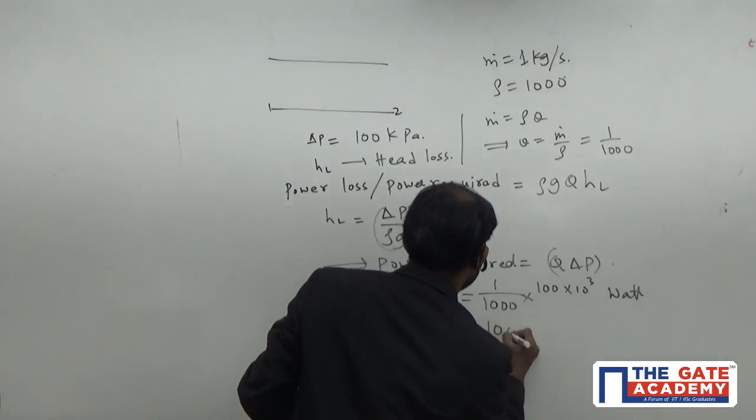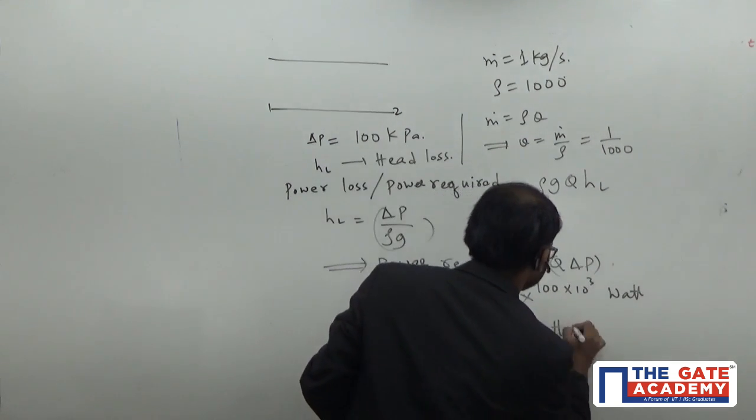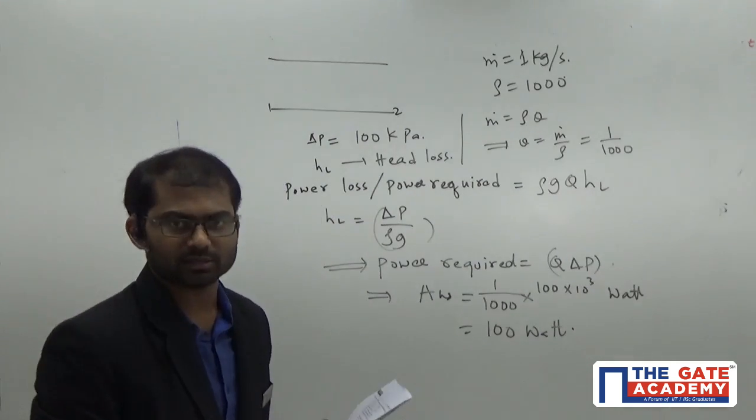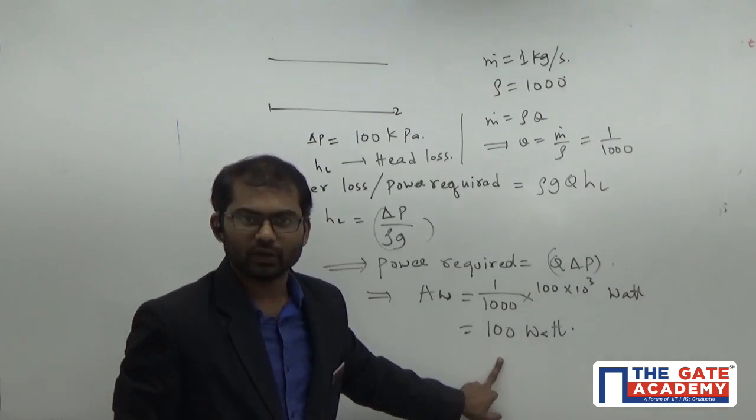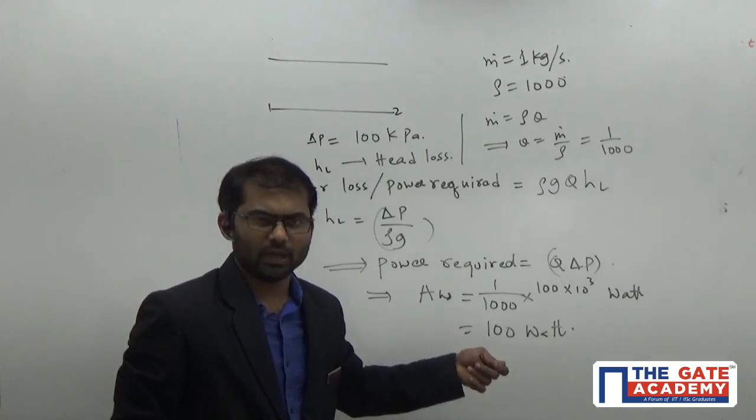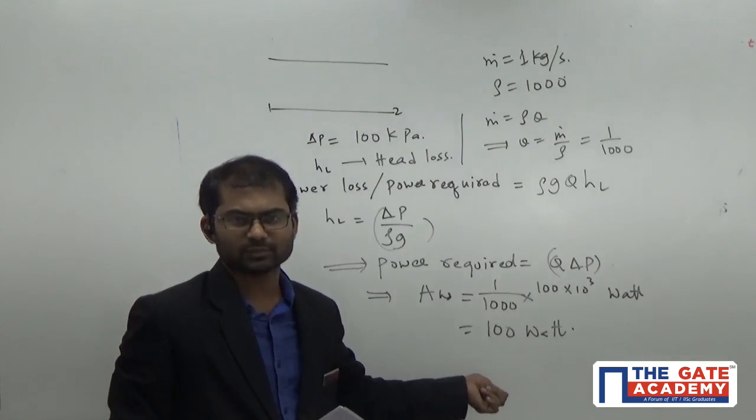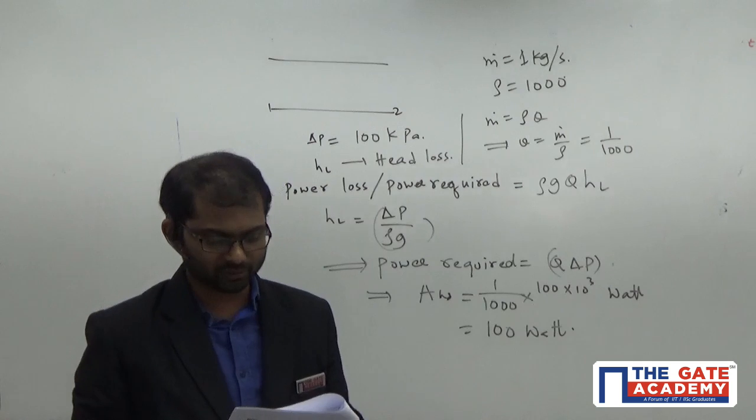So this will become watt here. So thousand, thousand, and the answer will become thousand watts. They are asking in terms of watts, so you have to enter in terms of watts itself. If they have asked in terms of kilowatts, you would have given the answer in terms of kilowatts as 0.1 here. Okay, so you have to make sure regarding the units here.